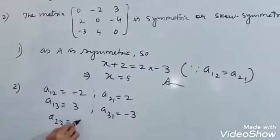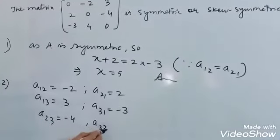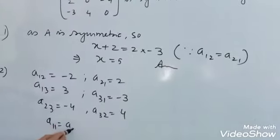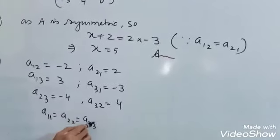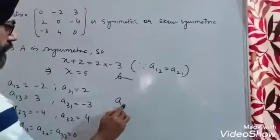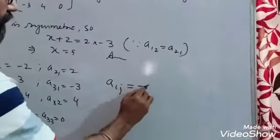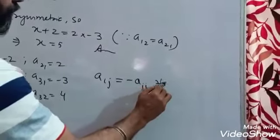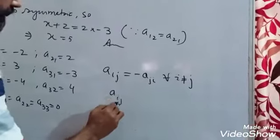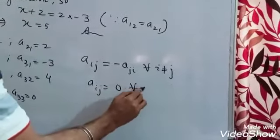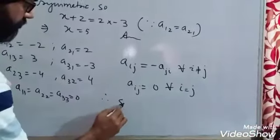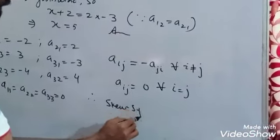Next, A_23 is minus 4 and A_32 equals 4. What about the elements A_11, A_22, A_33? Each one equals 0. So in each case, A_ij equals minus A_ji for all i not equal to j, and A_ii equals 0 for diagonal elements. Therefore, it is a skew-symmetric matrix.